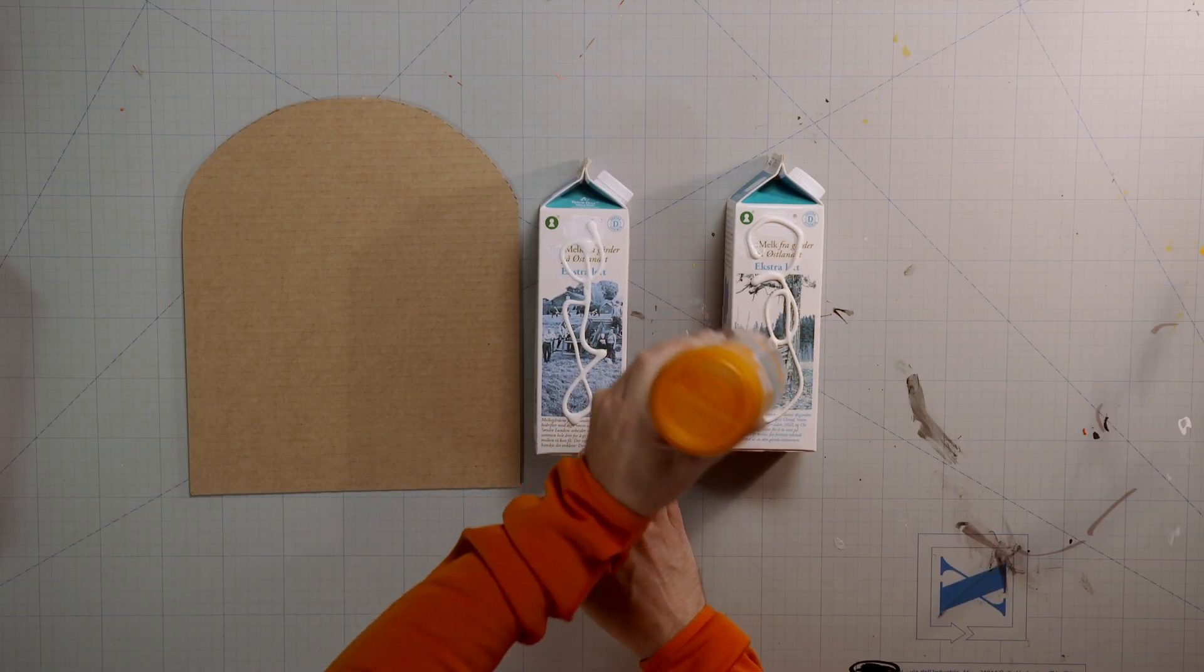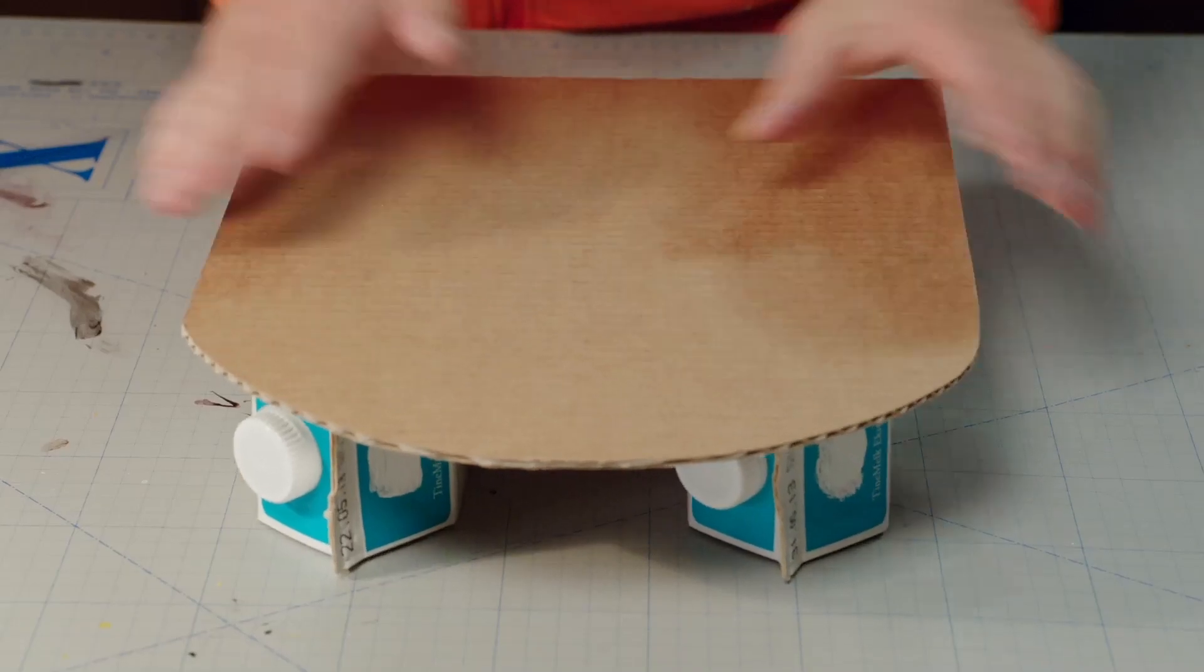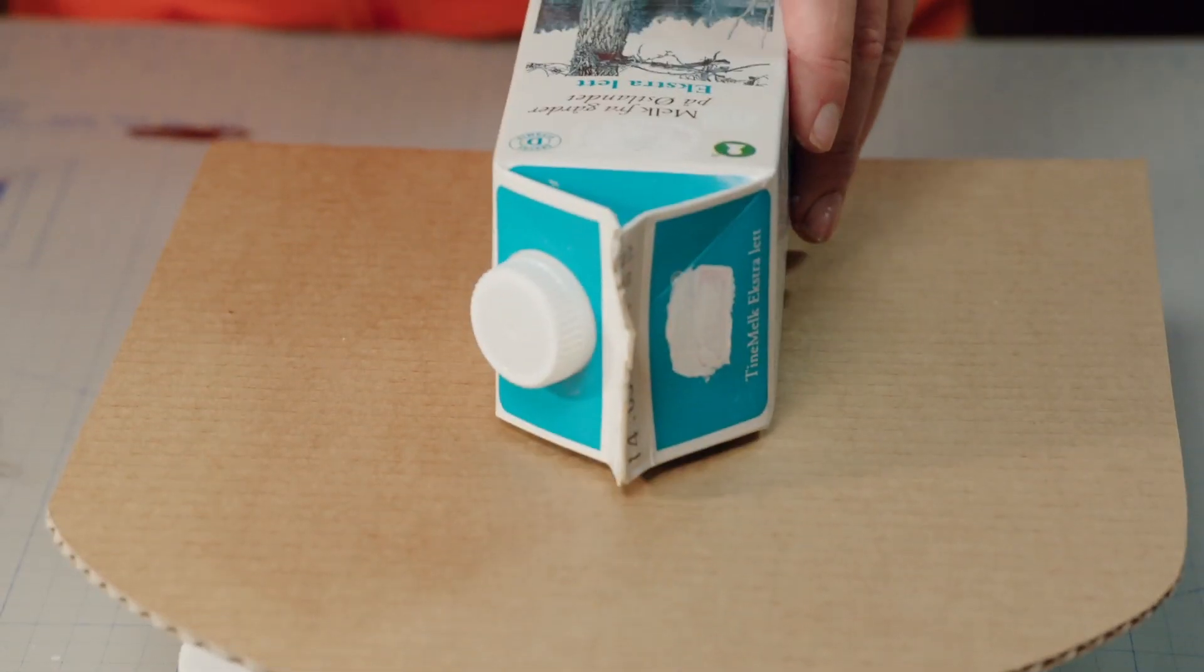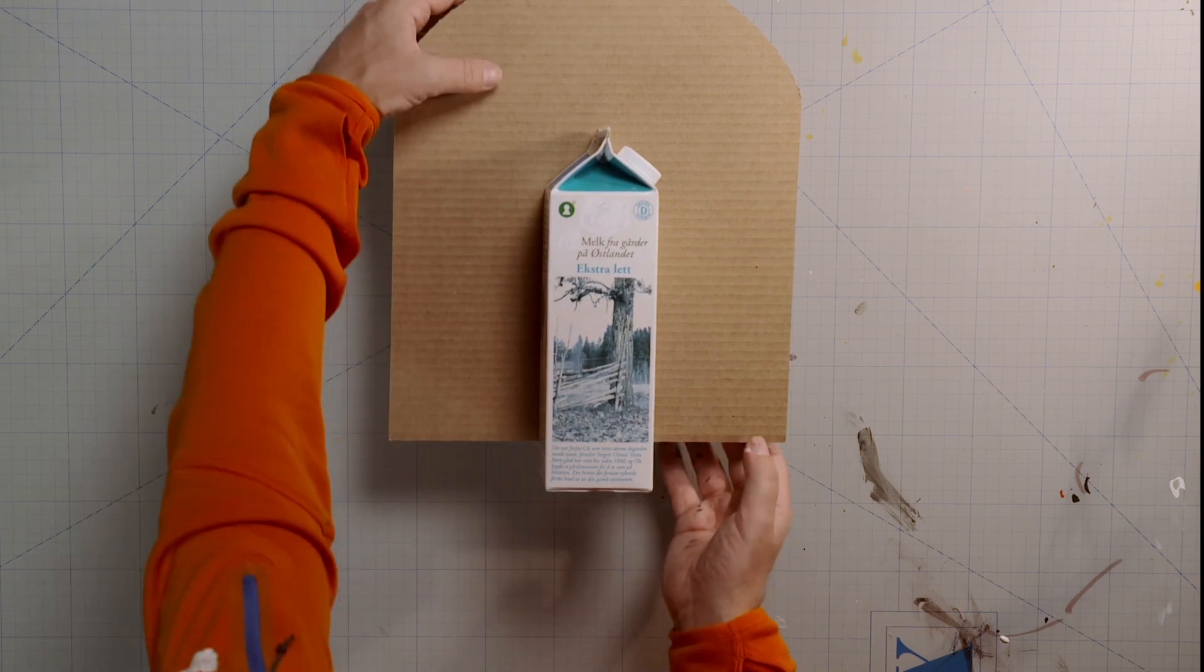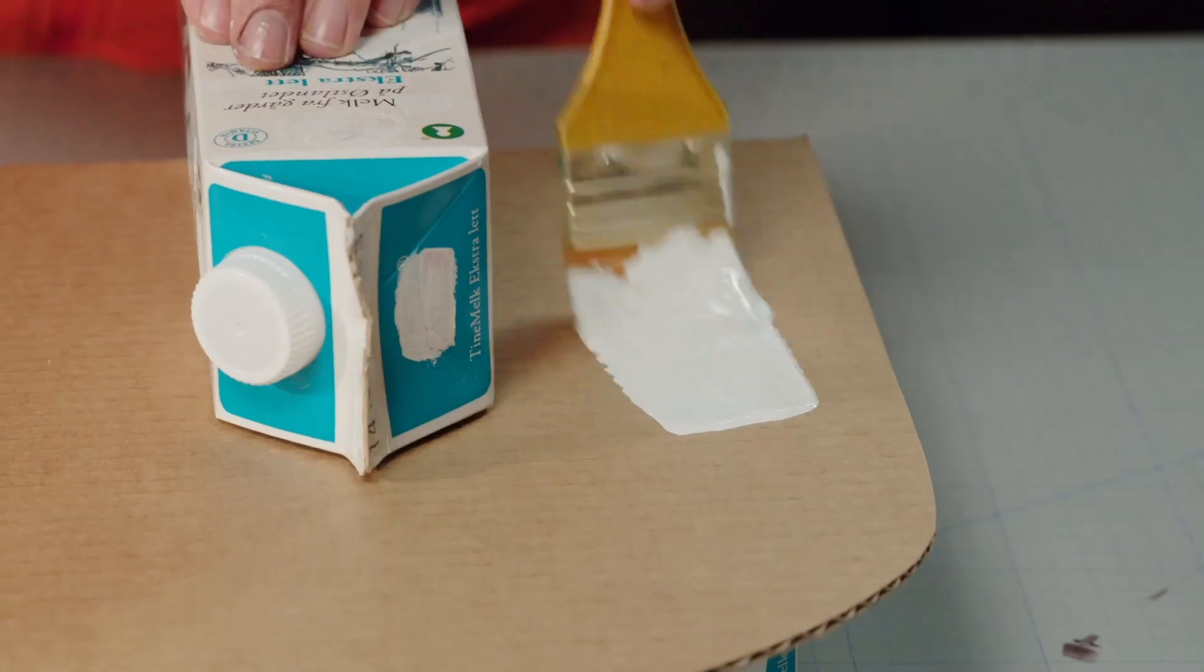First, glue two cartons to a cardboard deck. Then, glue another carton on top. Next, paint the whole thing white.